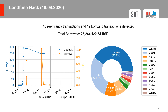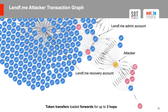Using HORUS, we identified a total of 46 transactions performing reentrancy attacks against Lendf.me and 19 transactions using the stolen tokens to borrow other tokens. The attacker borrowed from 12 different tokens worth a total of more than 25 million US dollars. We used HORUS to trace the flow of stolen tokens from the attacker's account for up to 3 hops. We found that the attacker initially traded some of the stolen tokens for other tokens using Paraswap, Compound, Aave, and OneInch. However, around 10 hours later, the attacker started sending all the tokens back to Lendf.me's admin account. Lendf.me then moved all the tokens into a recovery account where users could reclaim their stolen tokens.